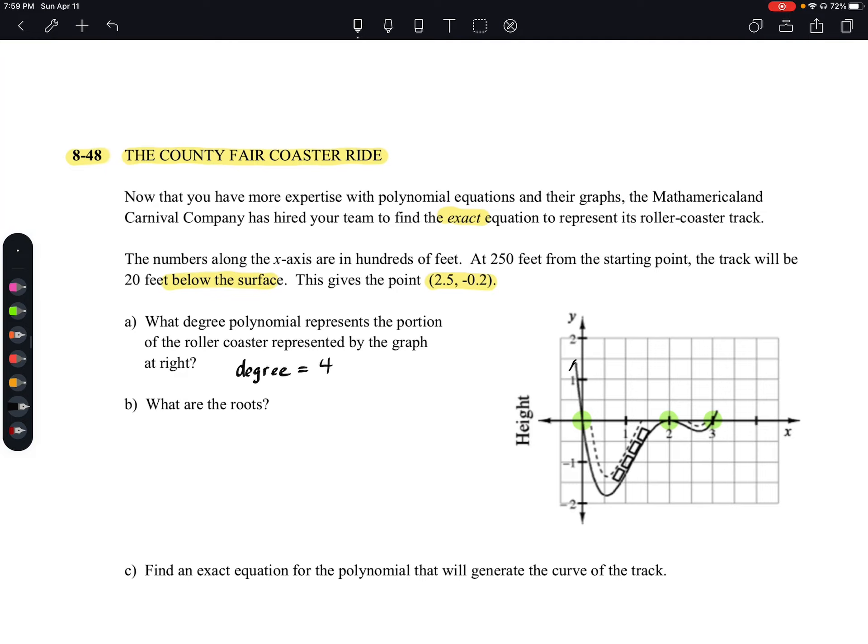And that seems correct, because look at our end behaviors for up, up. We know when it's an even number degree, they have to have the same end behaviors. So they're both going up.